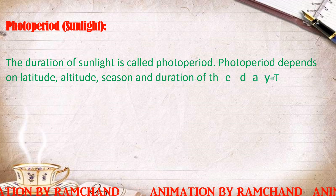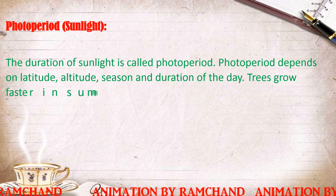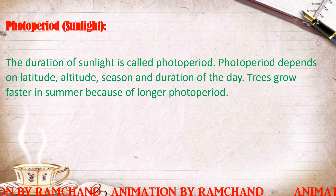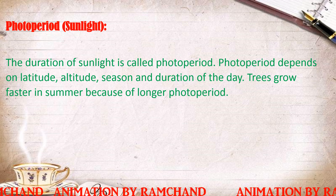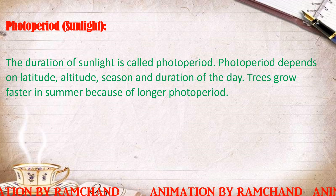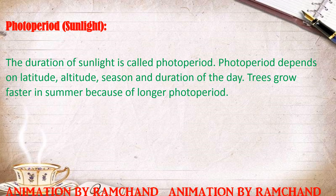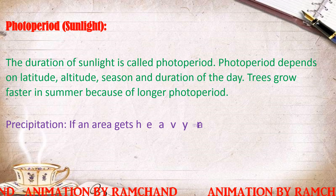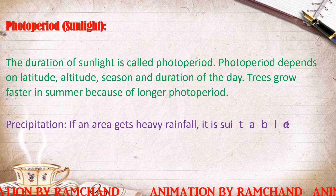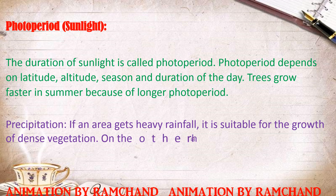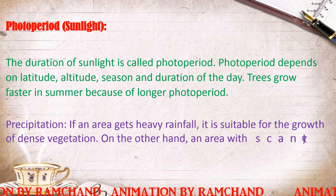The duration of sunlight is called photoperiod. Photoperiod depends on latitude, altitude, season, and duration of the day. Trees grow faster in summer because of longer photoperiod. If an area gets heavy rainfall, it is suitable for the growth of dense vegetation.